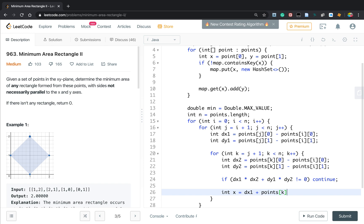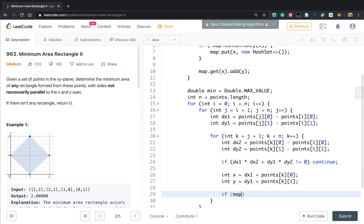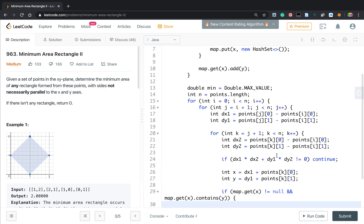So dx1 plus xk, which is points k0. And the y will equal to dy1 plus points k1.